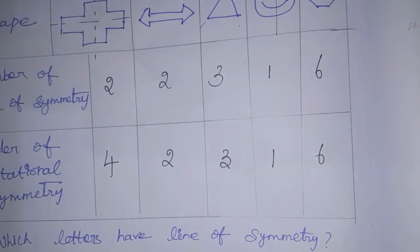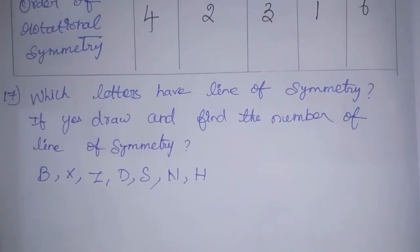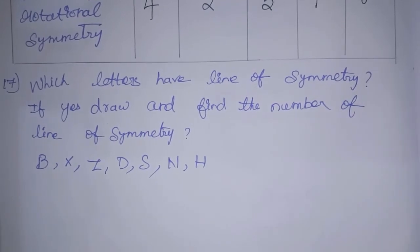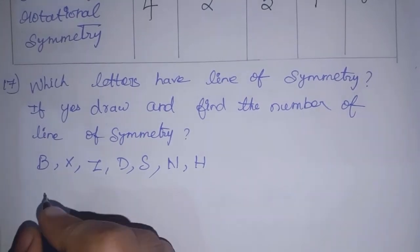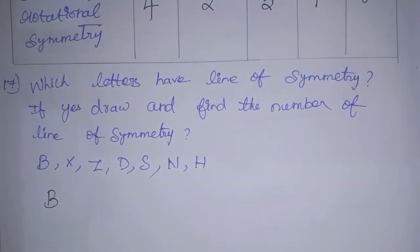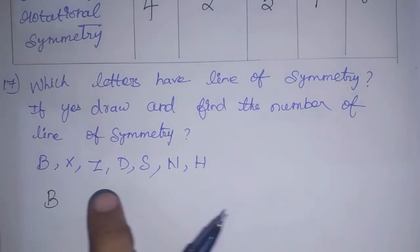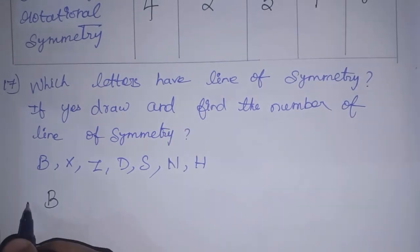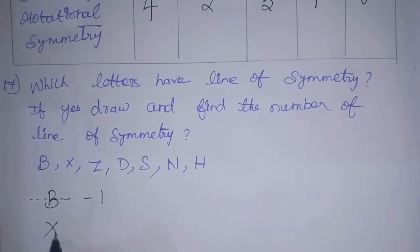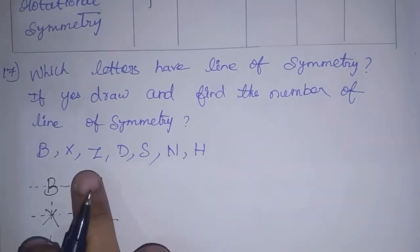Next is the 17th sum: which letters have a line of symmetry? If yes, draw and find the number of lines of symmetry. In any diagram there is a line of symmetry. B has one line of symmetry. Next is X — you can draw lines here and here, so X has two lines of symmetry. Next is Z — we cannot draw it, so Z has no line of symmetry.